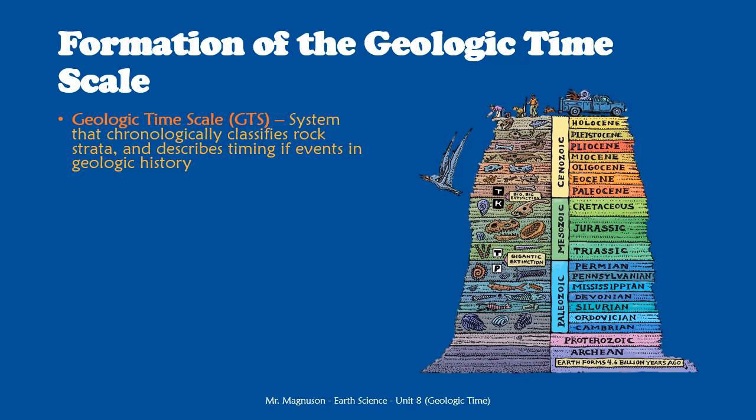So first off, how did scientists come up with this idea? The geologic time scale is the system that chronologically — in time order — classifies rocks, the rock layers, and major events in geologic history. These look like the different layers that we were trying to date with Steno's laws. The geologic time scale tries to put all the events recorded in the rocks in order. This was first devised by scientists in the 1700s and 1800s — scientists like Steno, who worked with different layers of rocks, and William Smith, who used fossils to help put them in order.